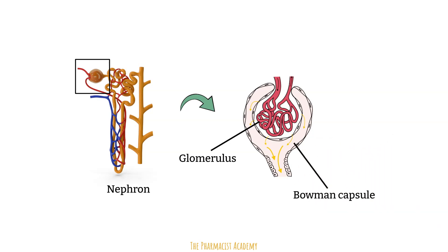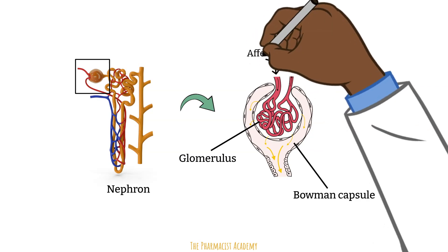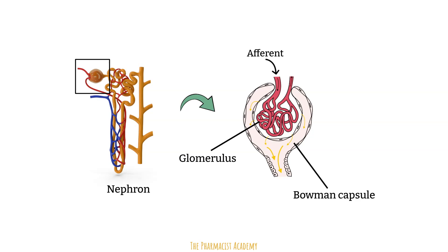The renal artery brings the blood from the rest of the body to the kidney. The blood enters the glomerulus of the nephron through the afferent arterioles. The glomerulus will then filter out any excess fluids, acid, bases, minerals, and other substances into the tubules. Think of the tubule as the duct or pipe that contains all the waste and other substances that are filtered out of the blood.